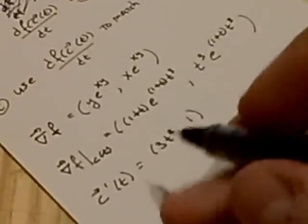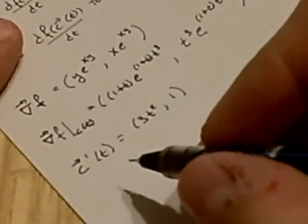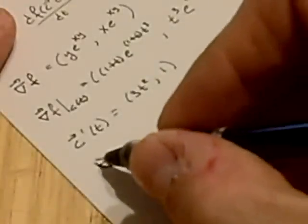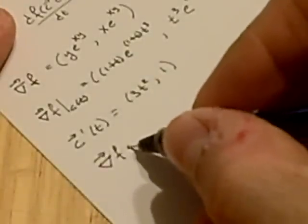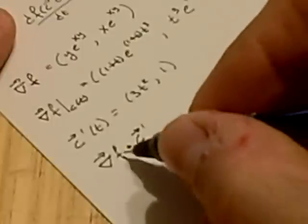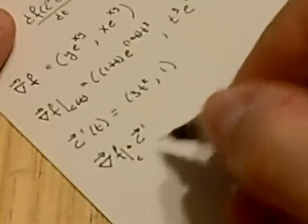We can move to part b, which is to compute their dot product. So we have grad f dot with c prime. This is the gradient evaluated at the path.